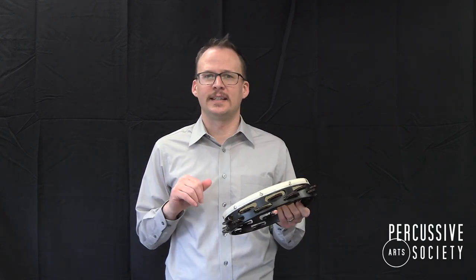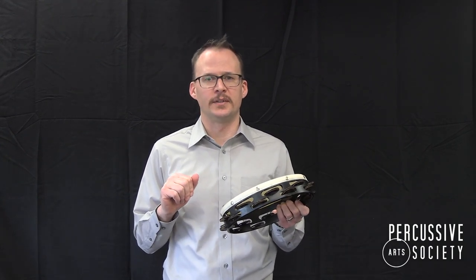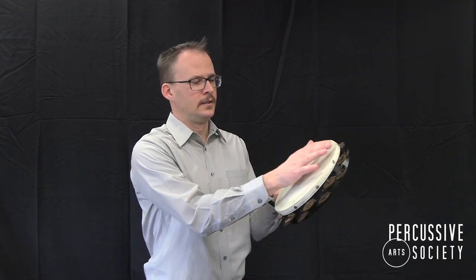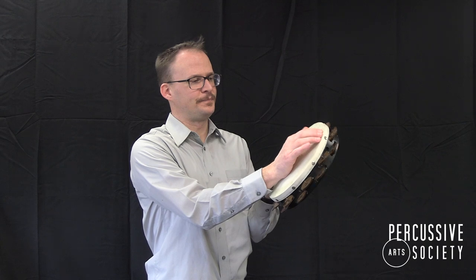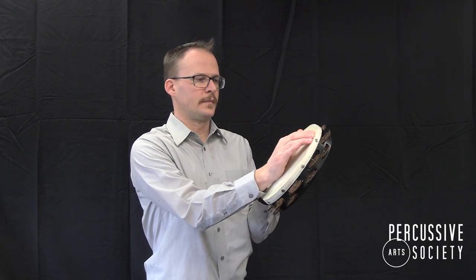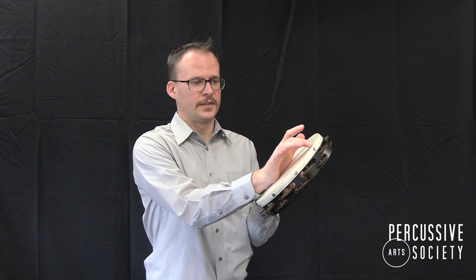Now we have three basic techniques for our three main volume levels. For soft playing, palm on the head, fingers play on the edge. If we need it to be softer, use less fingers.